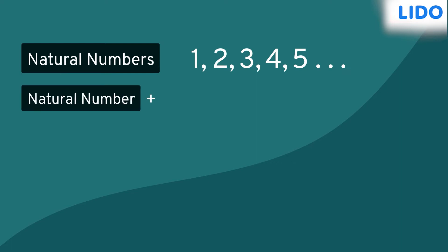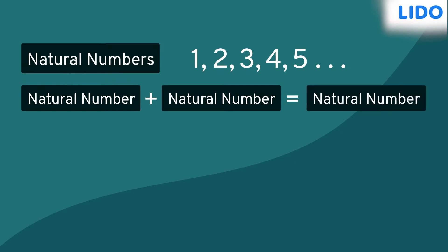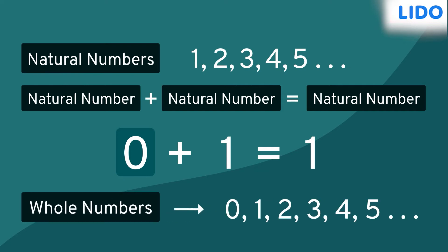As a result, natural numbers could be added to get other natural numbers. Then we realized there is no natural number which when added to 1 gives 1. To settle this, a new number 0 was introduced, and this new set of numbers, i.e., natural numbers and 0, was named whole numbers.